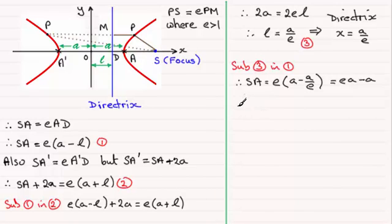So OS is equal to A plus SA. I've got SA as that, so if I add it to A, I'm just left with EA. So you can see that OS equals EA. So therefore, the coordinates of S are EA or AE, zero.